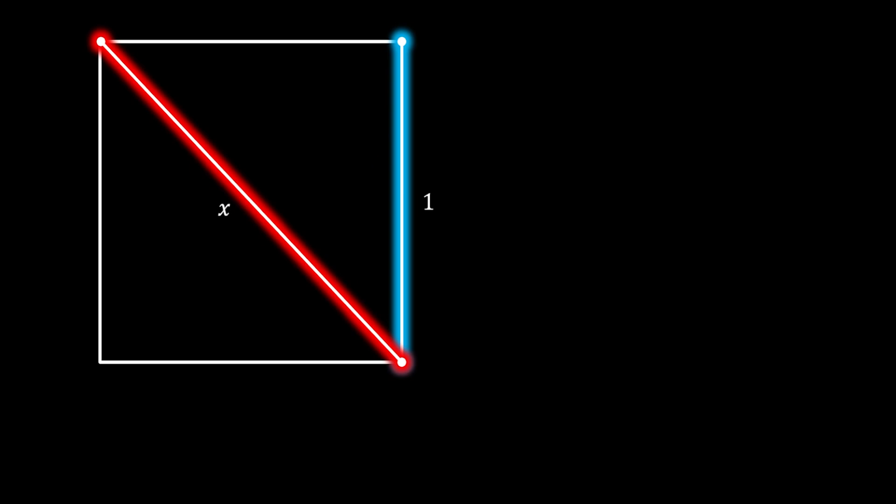Now, you can see that we only have the square with the side of 1 and the diagonal of X. So, you can calculate this in just a couple of seconds. You can say that the diagonal is equal to the side times square root of 2, which means that the diagonal of the square is equal to square root of 2, and this is our solution for X.